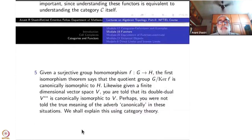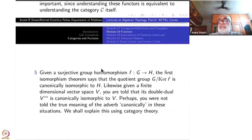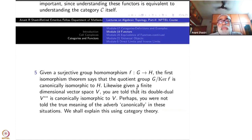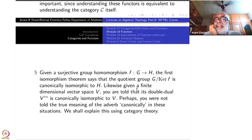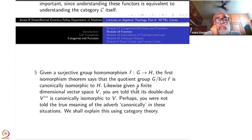So this is where I will stop. Next time I have to explain the canonicalness of G by kernel and V to V double-star. Thank you.